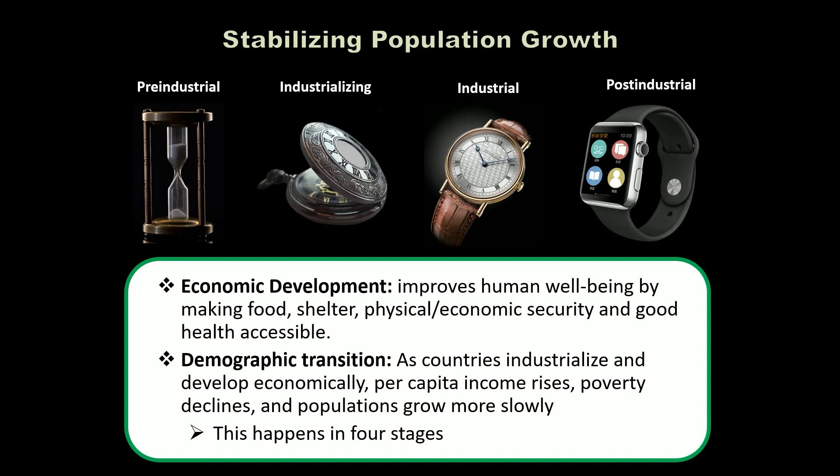At the pre-industrial stage, population grows very slowly because even though the birth rate is high — families are having six or seven kids — the infant mortality rate is also really high. In the pre-industrial stage there are no vaccines, no antibiotics, no access to good health care technologies, and less technology to grow abundant food, so starvation may occur. The death rate is high enough to match the birth rate, so overall population growth is slow.